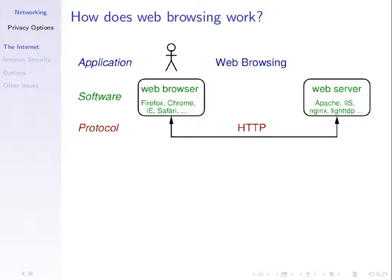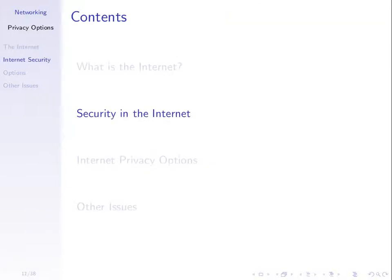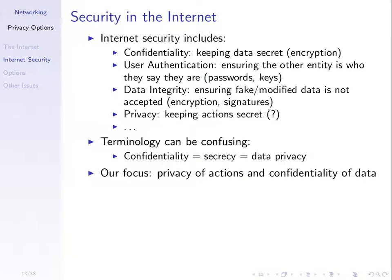Web browsing — you know how web browsing works, we've covered that multiple times: HTTP requests and responses. We want to look at security requirements in the internet, especially privacy options. Internet security covers many different things; it's not just about encrypting data. Going back to our very first topic in this course, we talked about CIA — confidentiality, integrity, and availability.